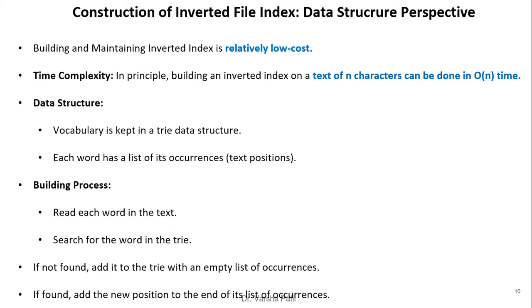For construction of an inverted file index, building and maintaining an inverted index is relatively low cost. In principle, building an inverted index on text of n characters can be done in O(n) time. The vocabulary is kept in a trie data structure, and each word has a list of occurrences storing text positions or byte offsets. The building process: read each word in the text, search for it in the trie — if not found, add it with an empty list; if found, add the new position to the end of the list of occurrences.